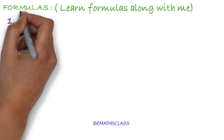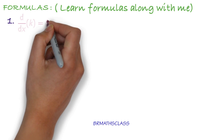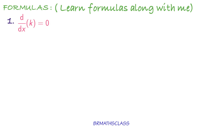First formula in derivatives: d by dx of k is 0. It means the derivative of a constant is 0. k is constant. For example, what is the derivative of 5? 5 is a constant, so the derivative of 5 is 0. Derivative of 1 by 2 is also 0. Derivative of any constant is 0. You learn the first formula.